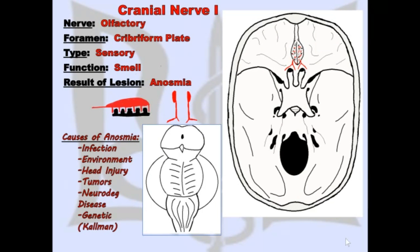Today's lecture begins a series revamping the cranial nerve series, starting with cranial nerve 1, the olfactory nerve. The olfactory nerve arises from the cribriform plate, seen here on this diagram of the skull.